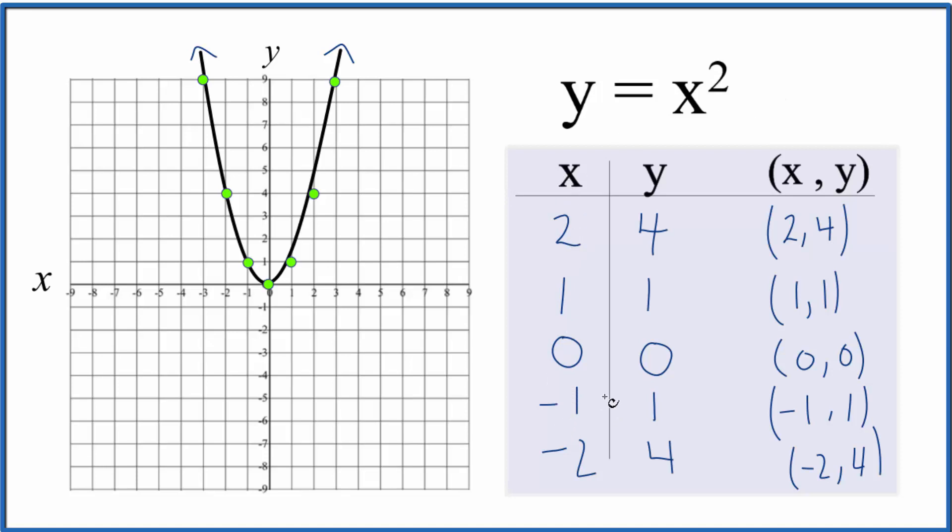These values would be on our graph. We could have chosen anything and we just put them in. So x is 2, 2 squared that gives us 4, so we have the point 2,4.